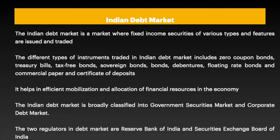The different types of instruments traded in the Indian debt market include zero coupon bonds, treasury bills, tax-free bonds, sovereign bonds, various other types of bonds, debentures, floating rate bonds, and commercial paper, along with certificates of deposit — the last two being instruments of the money market.